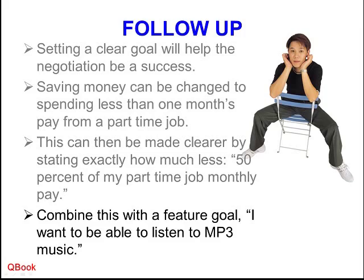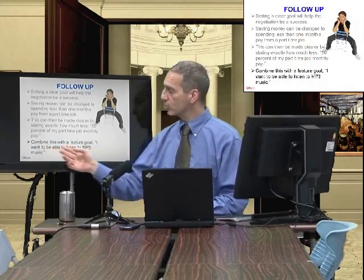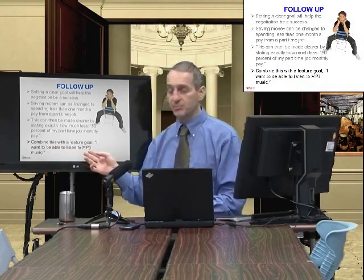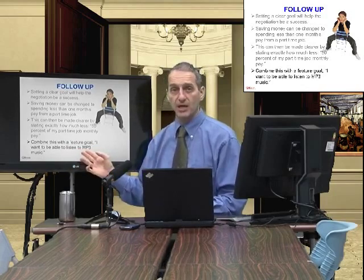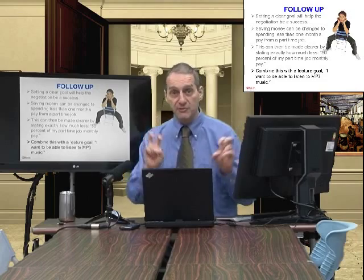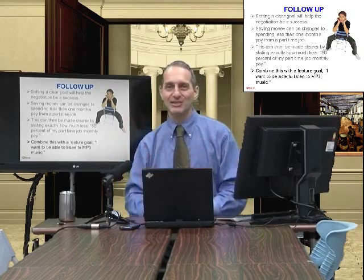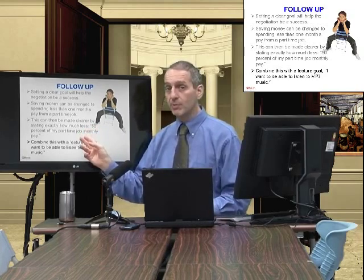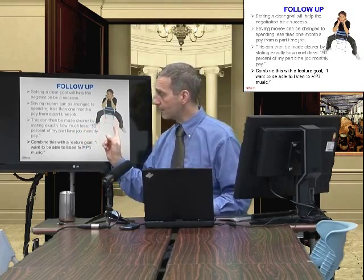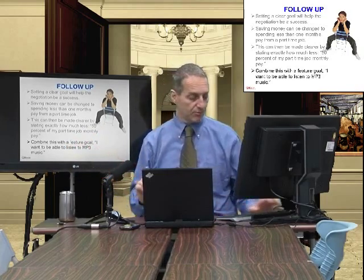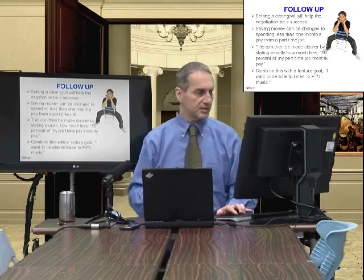Now we can add another goal. The one more goal is he wants to get the feature of ability to play MP3 music files. At the beginning we said I want to have the most features for the least price — of course, everybody wants that. But now we're getting specific: half of one month's part-time pay, and make sure that it plays MP3 music files. This is key.